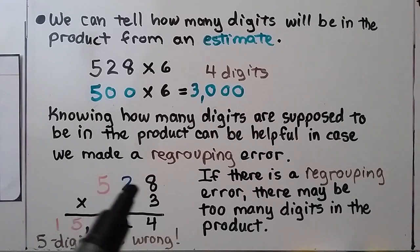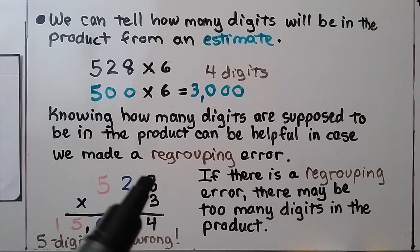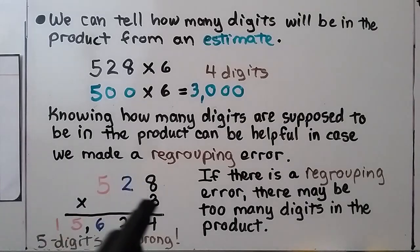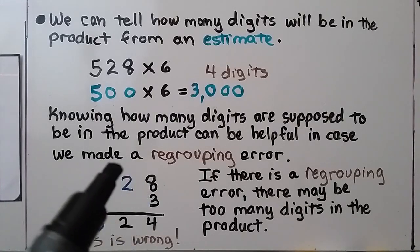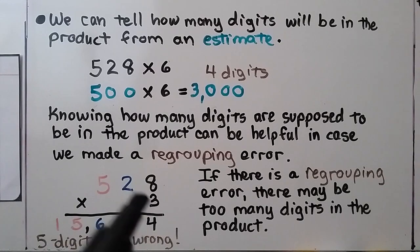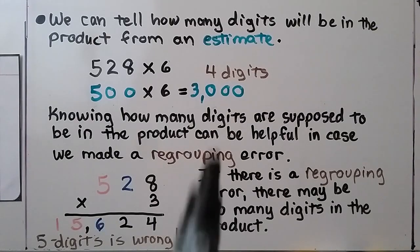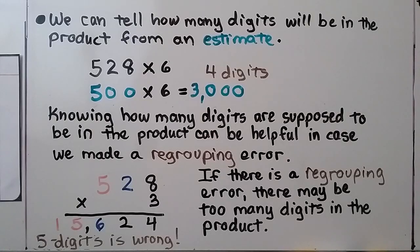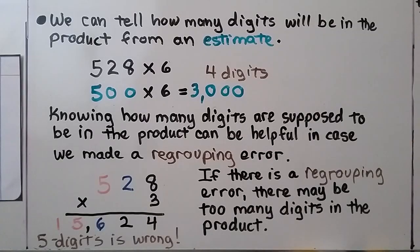For example, multiplying 528 times 3 with a regrouping error: 3 times 8 is 24, but instead of regrouping the 2 up to the next column, the person accidentally wrote 24 down. Then when they did 3 times 2, they got 6 and wrote it down — ending up with 5 digits instead of 4. So this is wrong; they were supposed to regroup. If there is a regrouping error, there may be too many digits in the product.